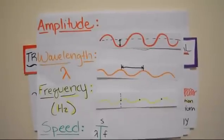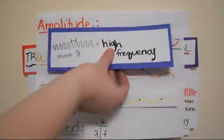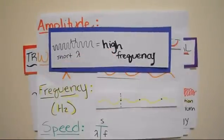One quick note about the relationship between wavelength and frequency. The shorter the wavelength, the higher the frequency, because the more waves can pass per second.